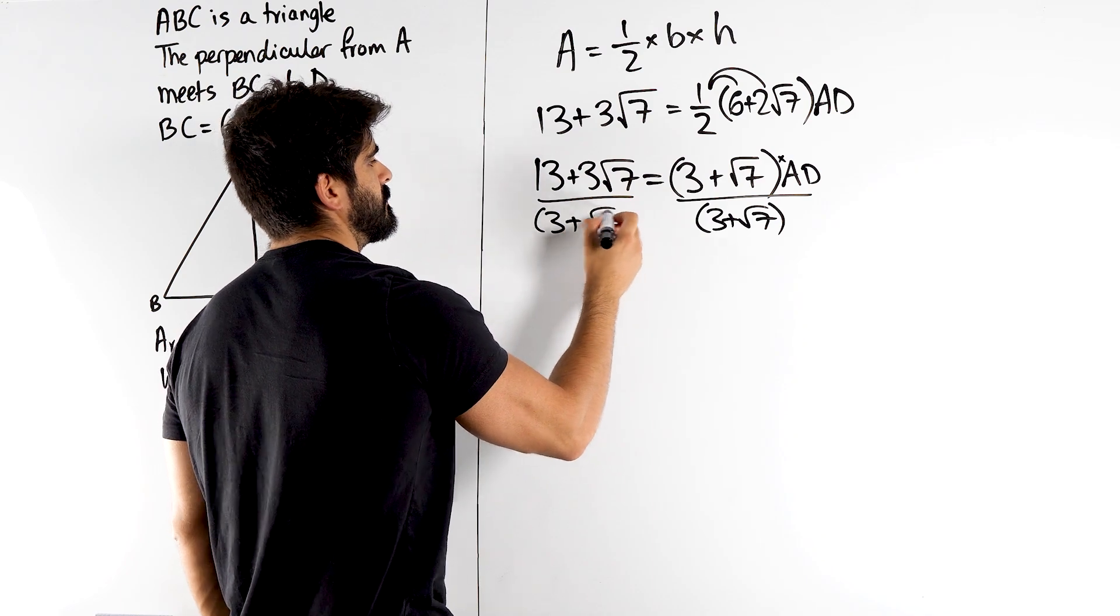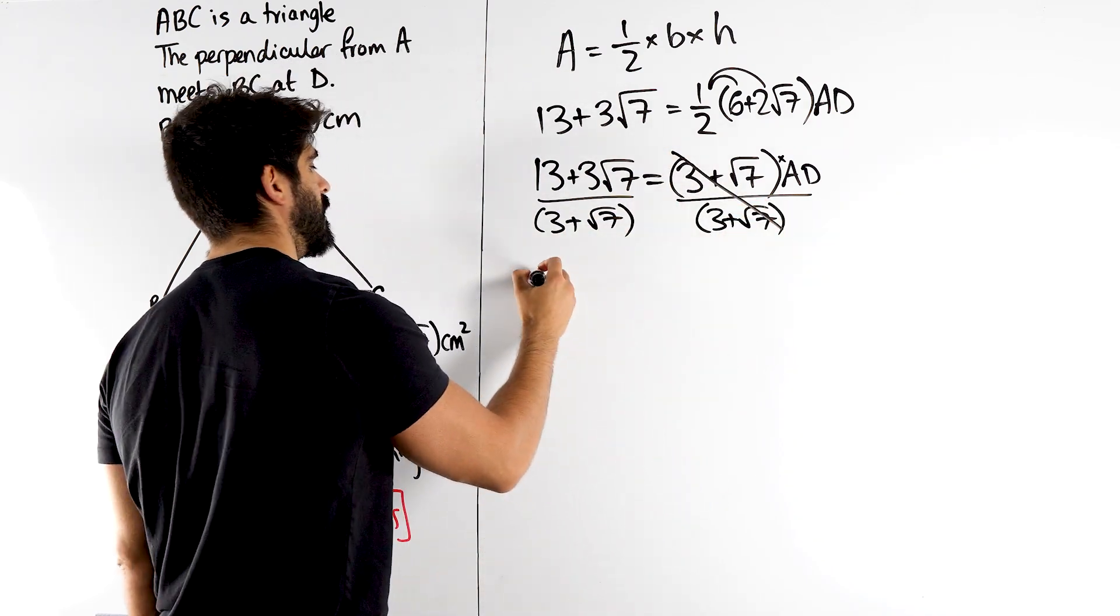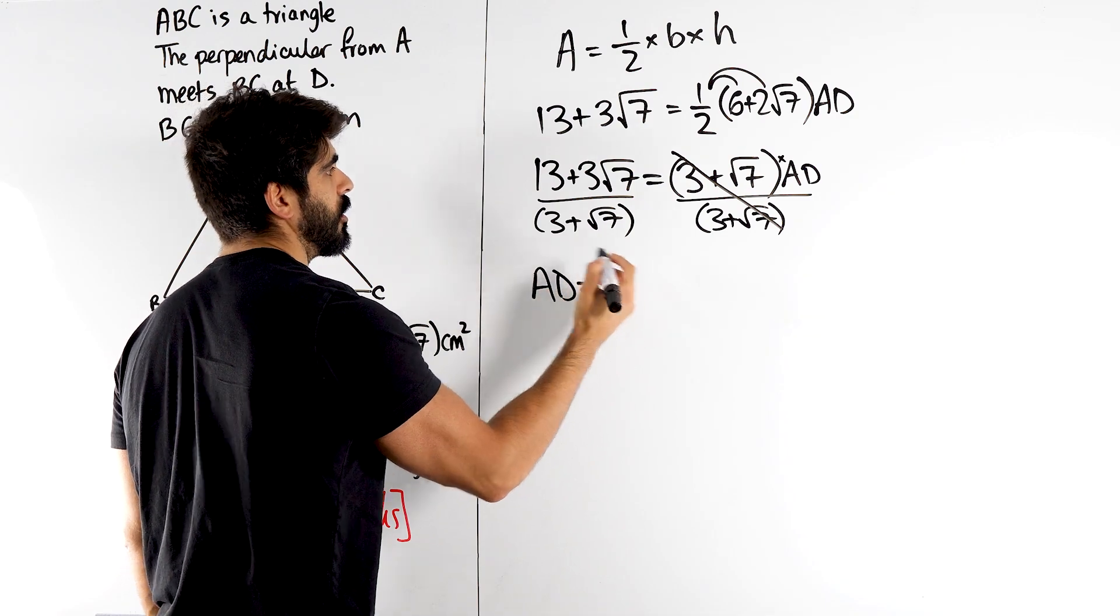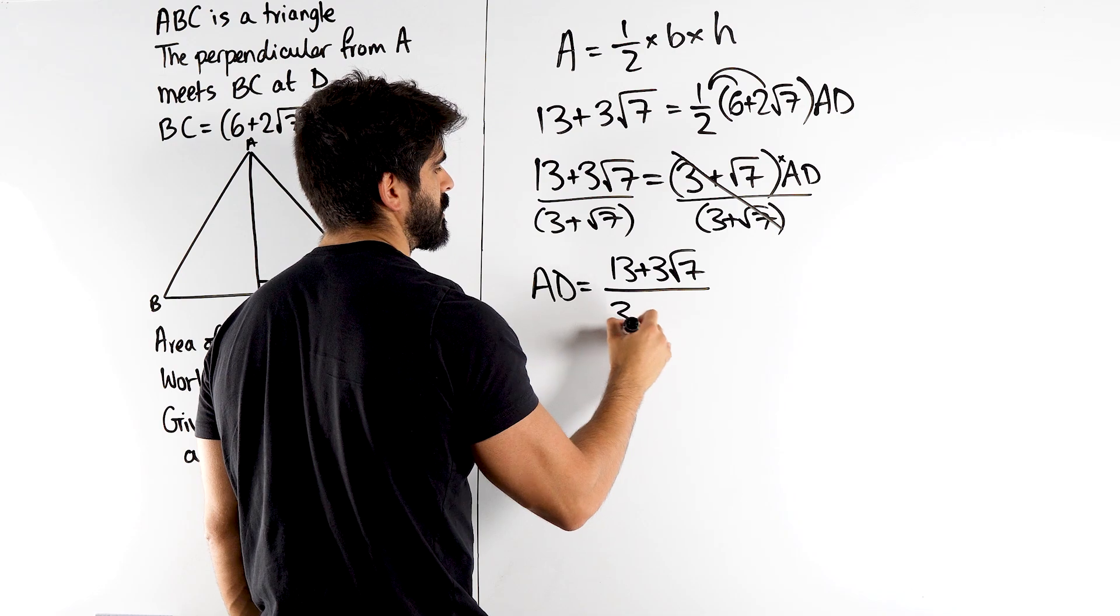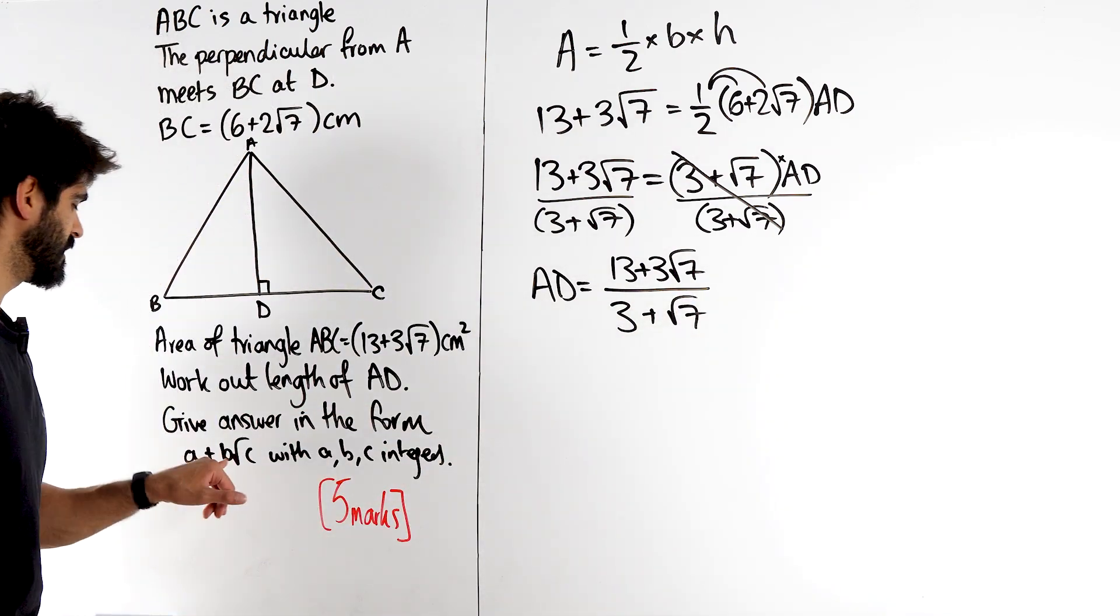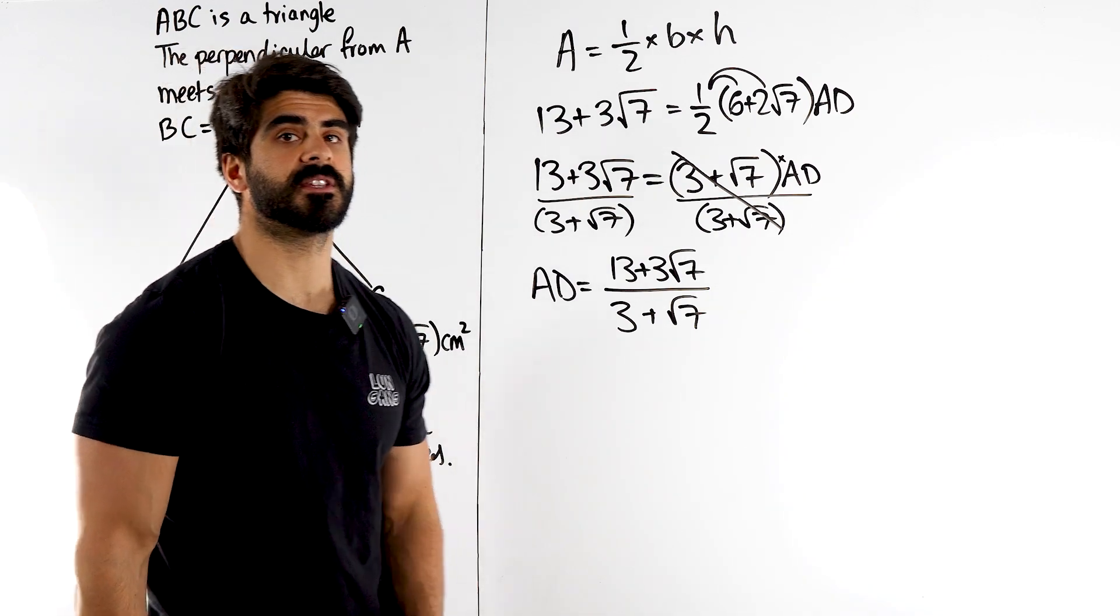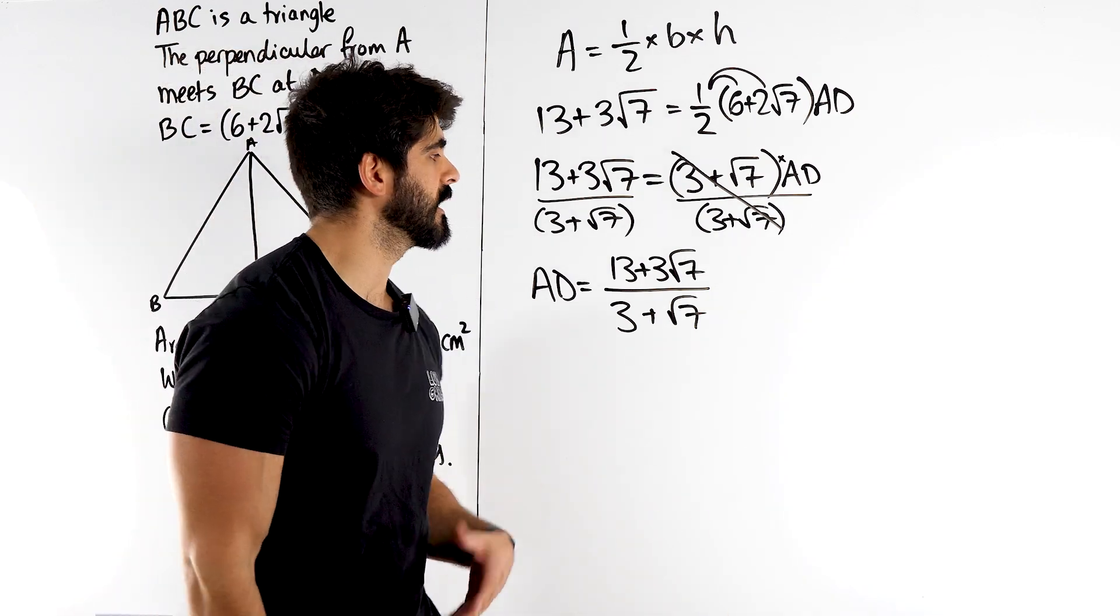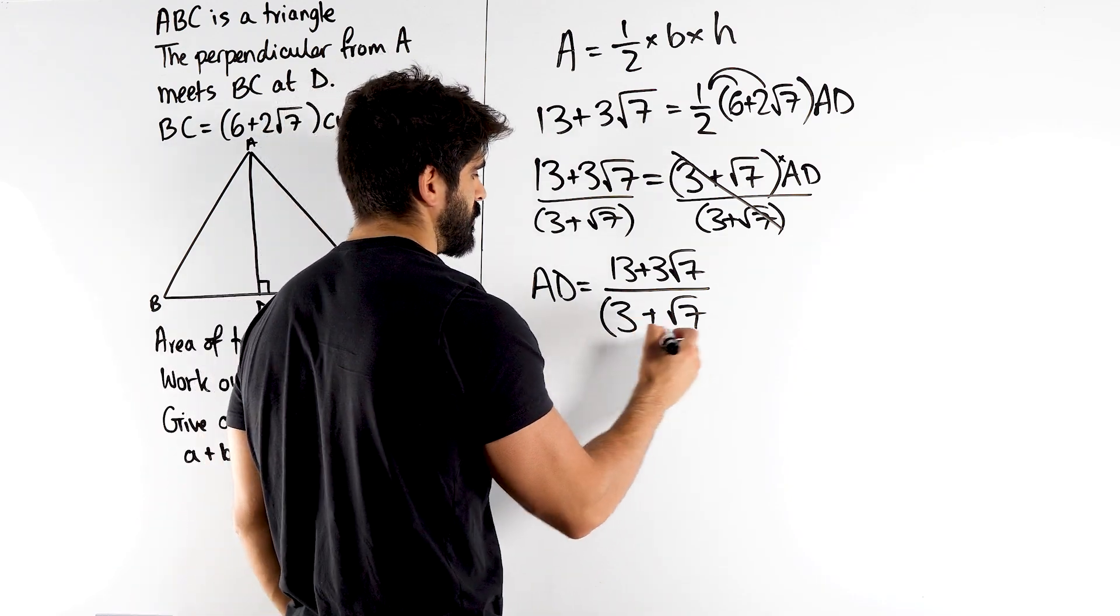Now, surprisingly, they can still ask, so traditionally this would be in a non-calculator paper, but they could still ask this in a calculator paper. And all they need to do is say, show all of your working. This is not in this form, A plus B root C. We need to rationalise this denominator, and they can be very clear in a calculator paper that you're not allowed to just type this in your calculator. So we need to rationalise this denominator.